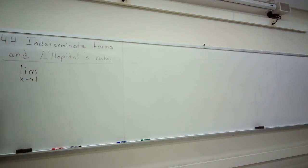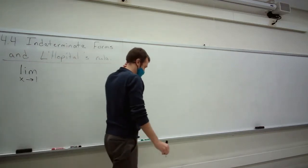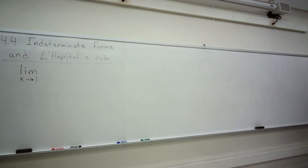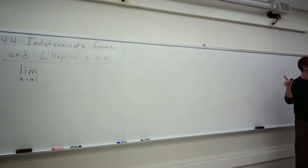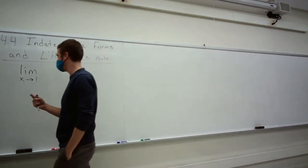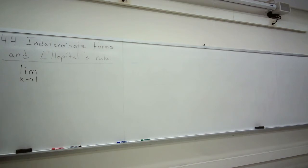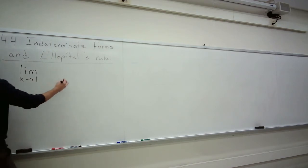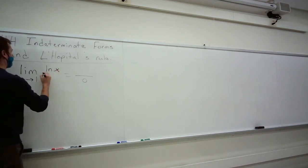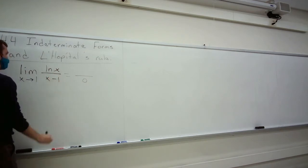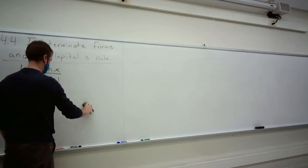We're going to have to go back to limits for this. There were lots of examples with limits before where we would have division by zero. Every derivative was a limit where the denominator was zero. Through algebraic manipulations and tricks of the trade, we can compute derivatives even though we have essentially a division by zero. Today we're going to talk about things where you have both a zero limit up top and a zero limit on the bottom — for example, the limit as x goes to 1 of natural log of x divided by x minus 1.